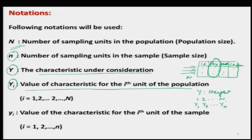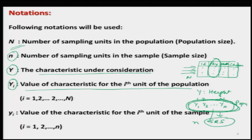From this population I try to draw a simple random sample. Some of these Y_i's will be selected in the sample, and we are assuming we want to draw small n number of units in the sample. That means out of the capital N values Y_1, Y_2, ..., capital Y_N, I want to choose some y's which are n in number — the number of y's will be equal to small n.